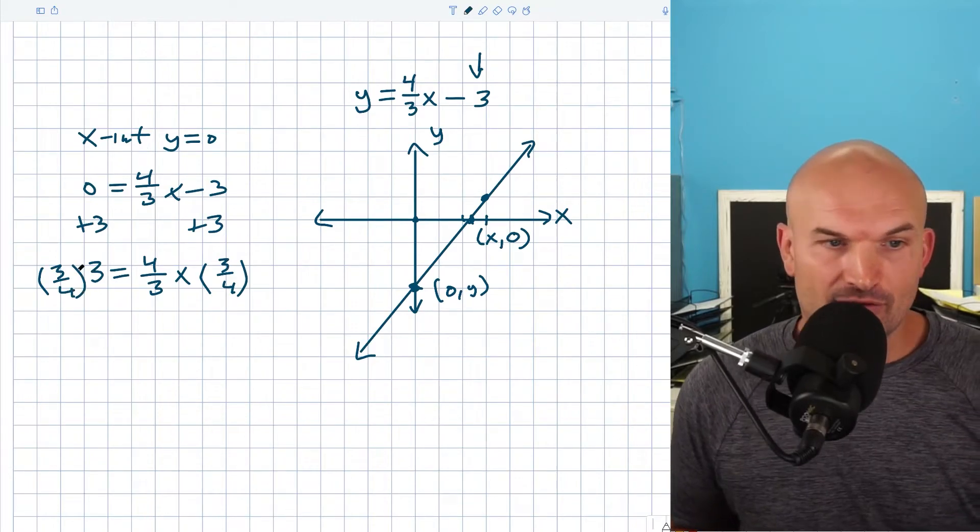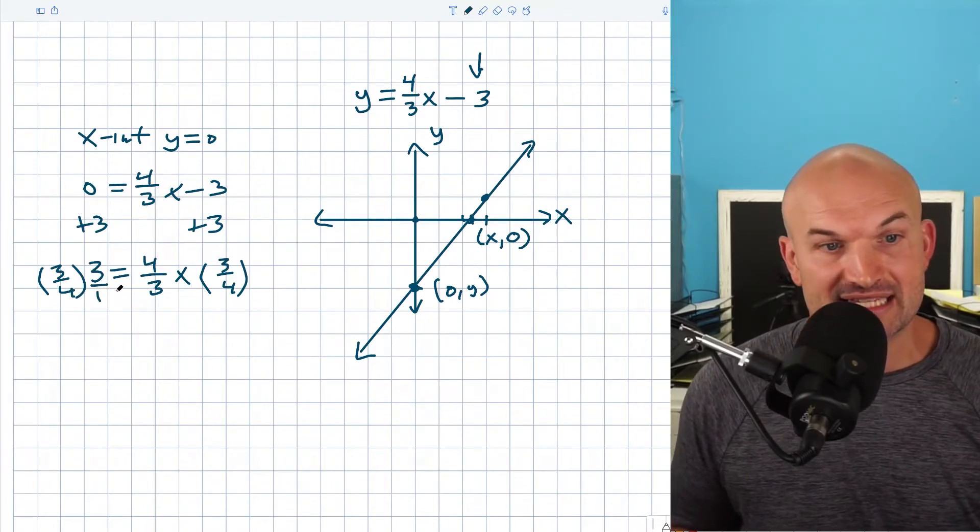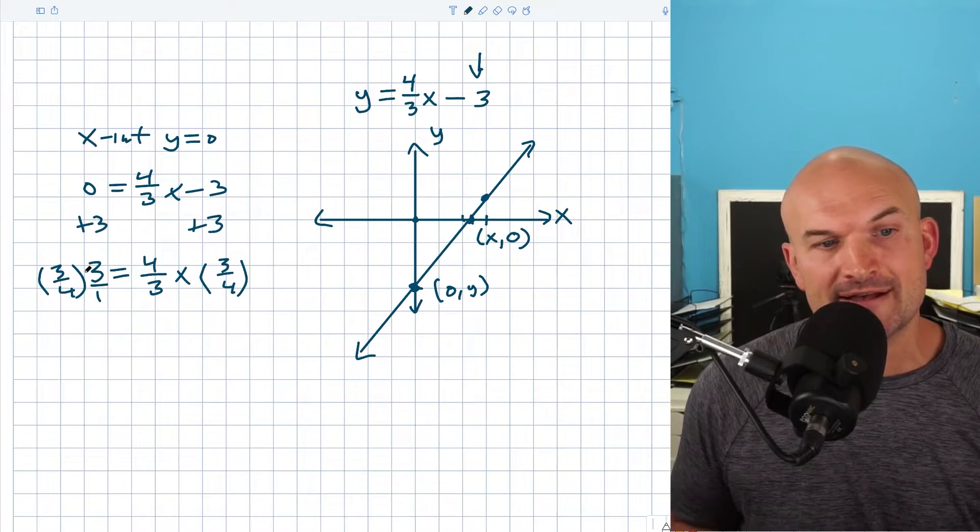So by multiplying by three-fourths, therefore that's going to be, I can rewrite this as a fraction. So then I can multiply straight across. So therefore that's going to give me nine-fourths is equal to x.